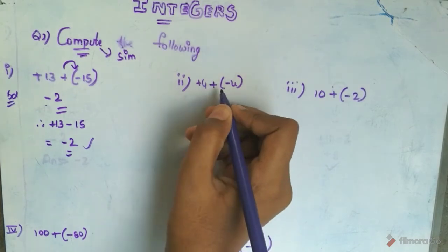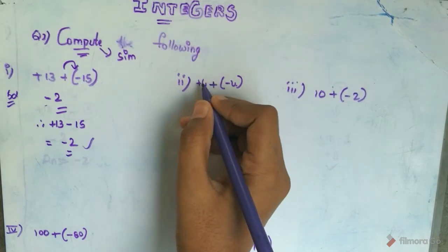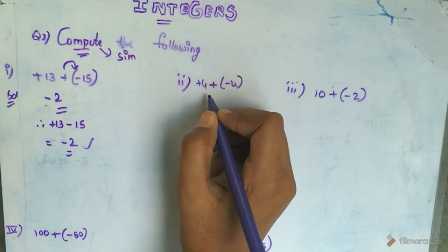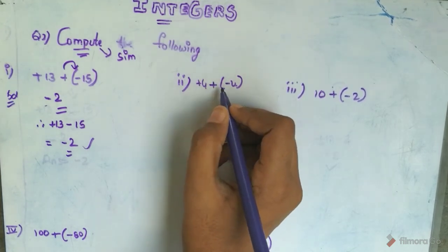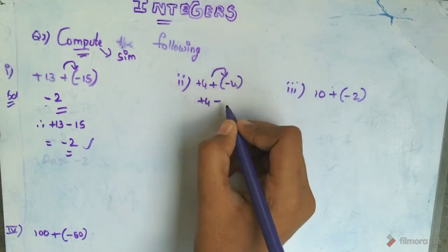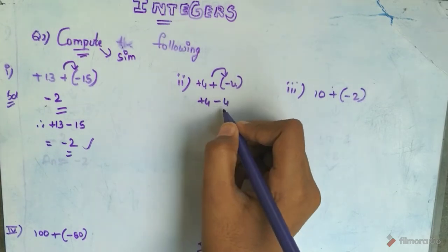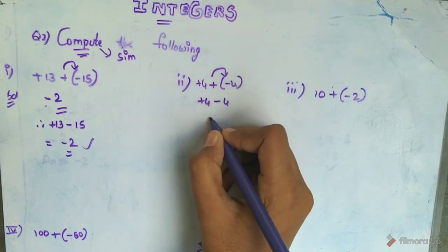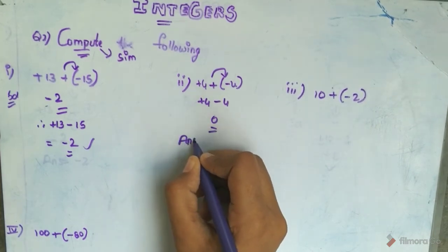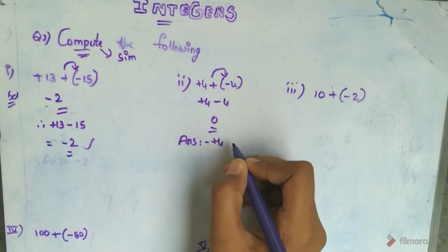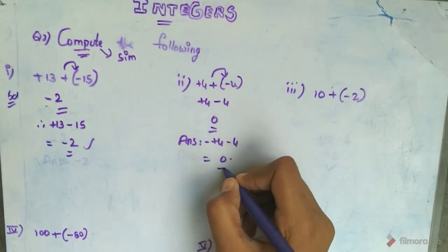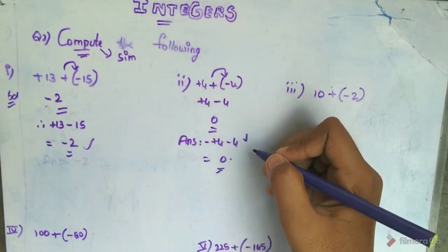For the second Roman, there is no larger number, so we should not keep any symbol. Plus 4 plus of minus 4 — 4 minus 4 is equal to 0. So the answer is: plus 4 minus 4 is equal to 0.